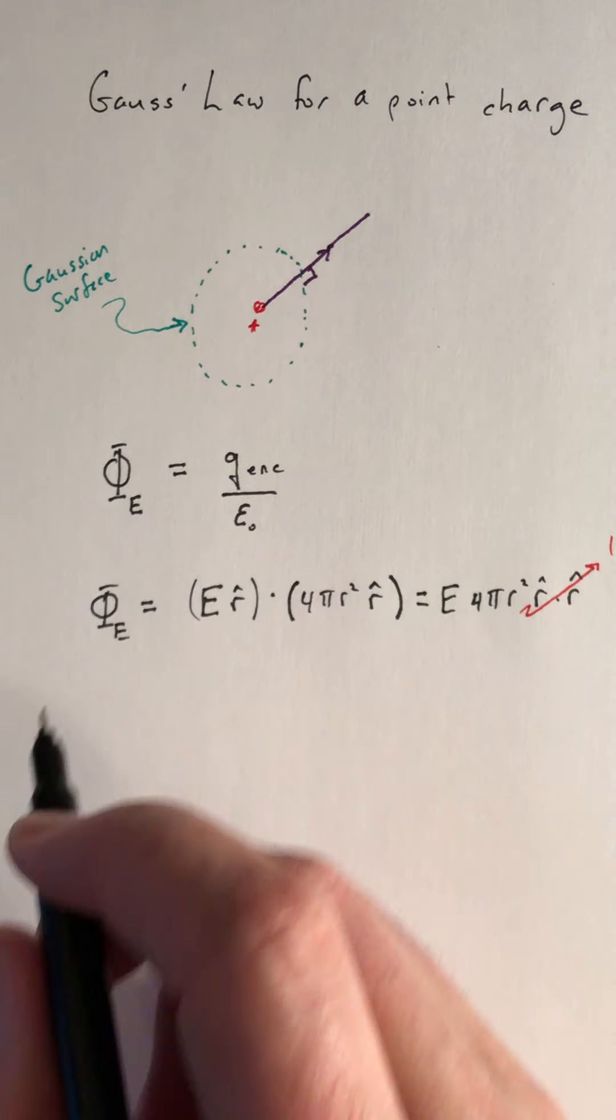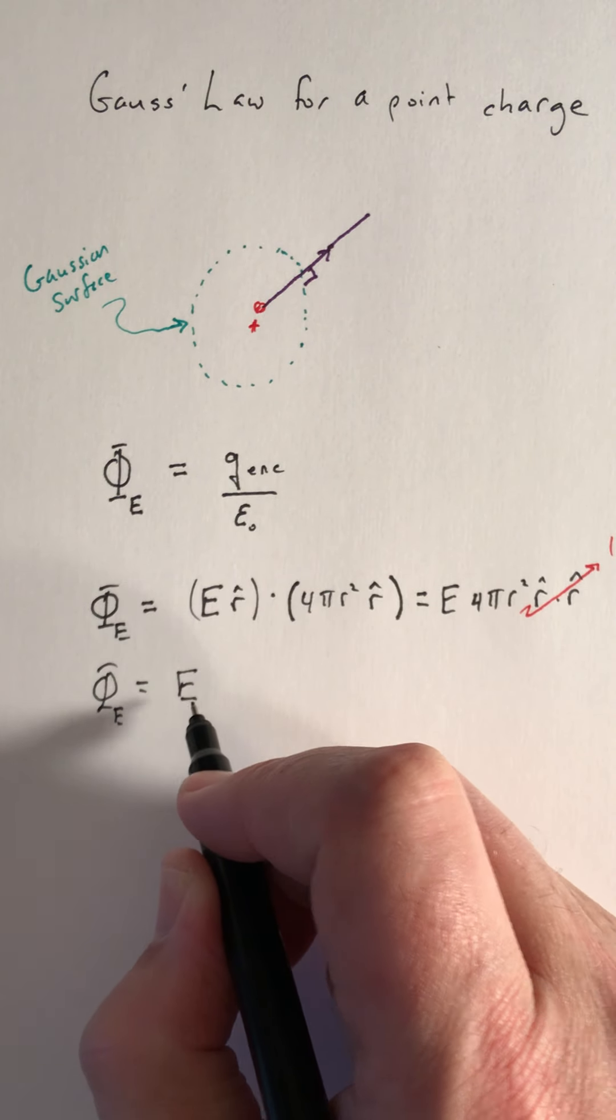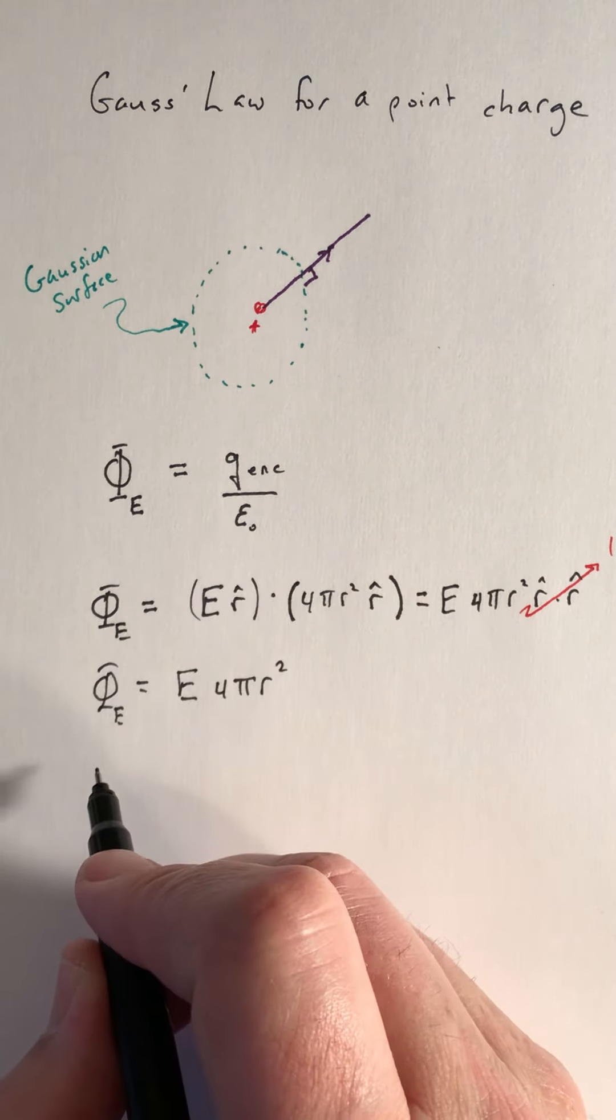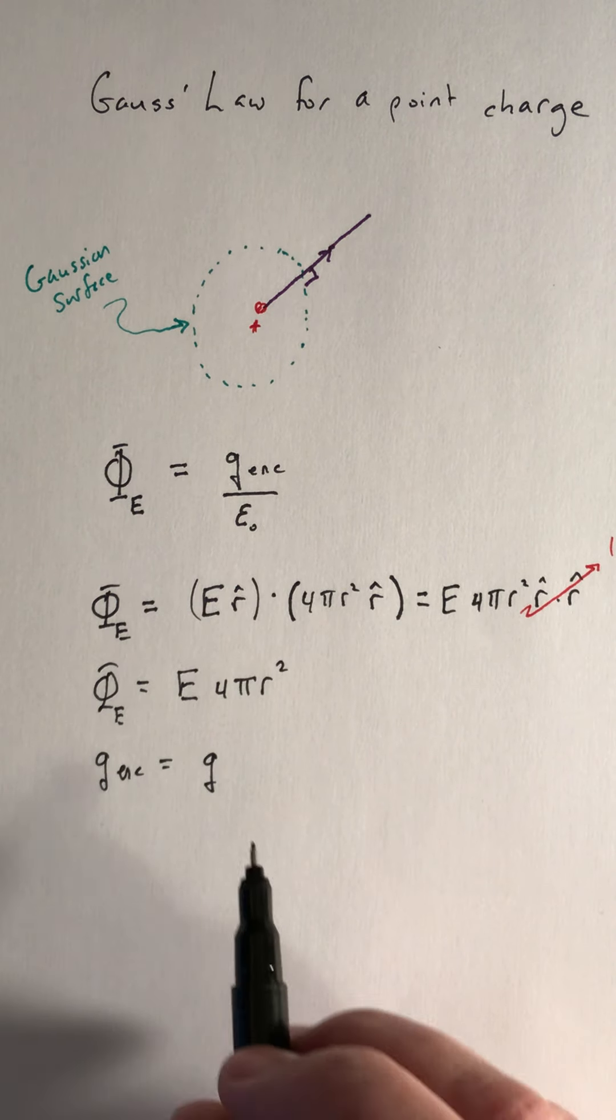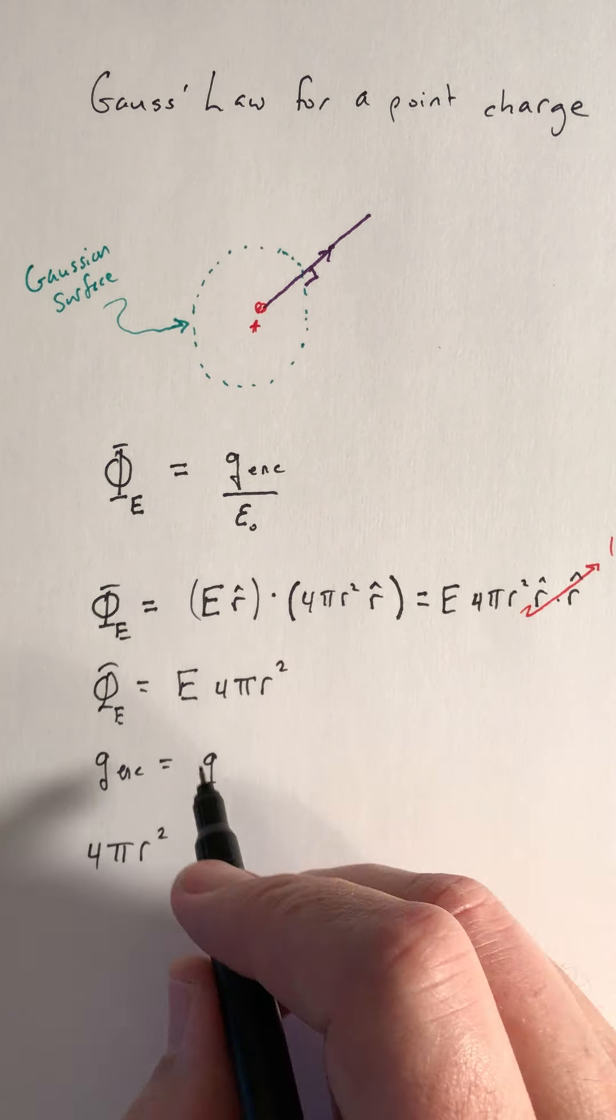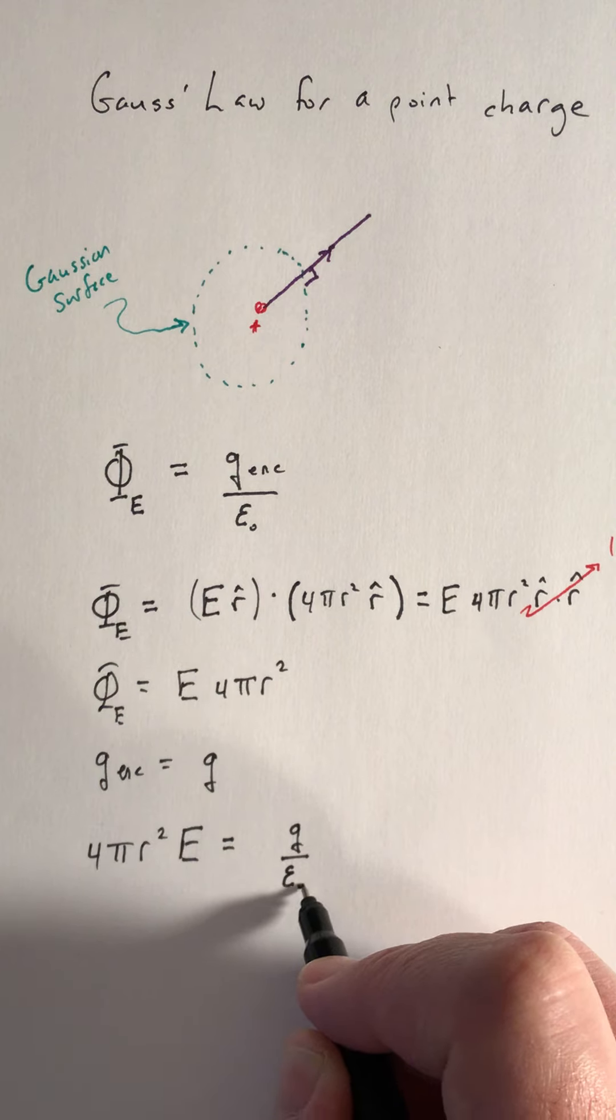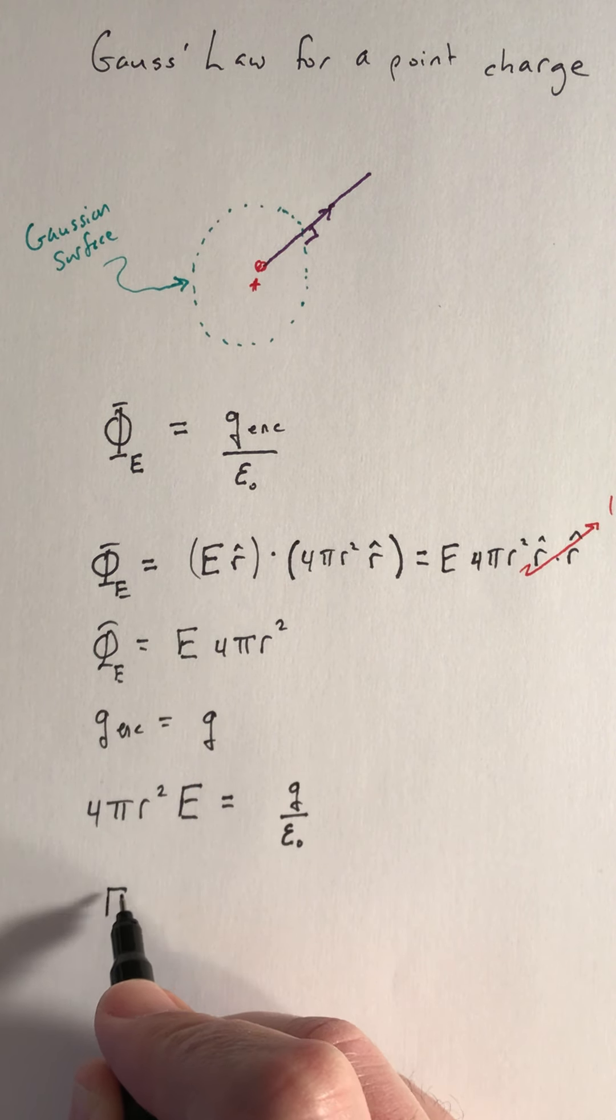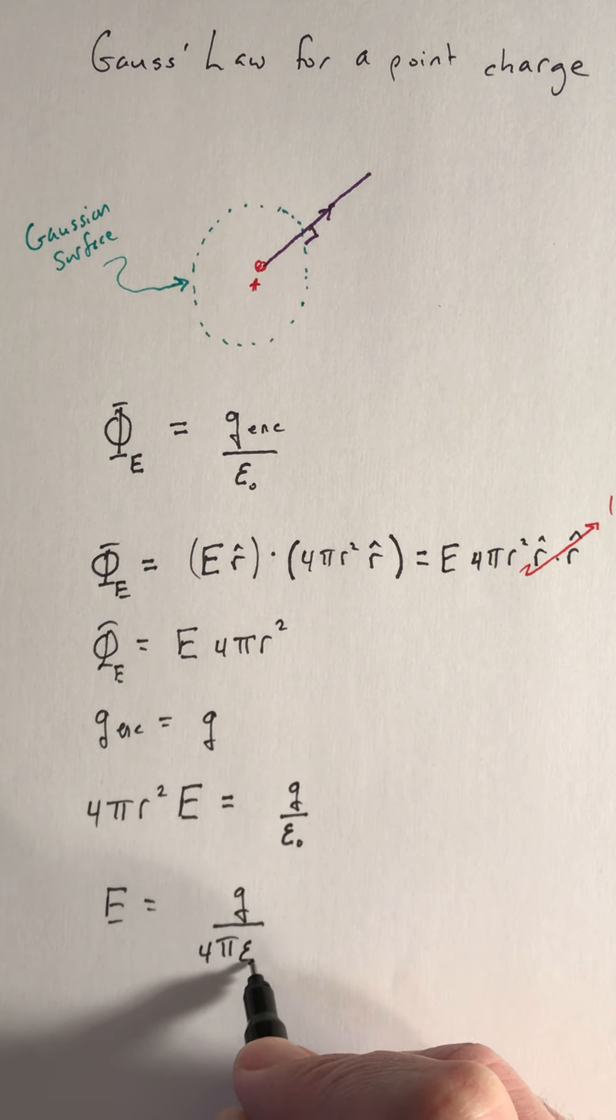So we have the left hand side from Gauss's law tells us that the flux of the electric field is going to be the electric field magnitude, which we're trying to solve for, times 4πr². On the right hand side of Gauss's law in this case, q enclosed is pretty simple, just q. So put everything together in Gauss's law, we have 4πr²E = q/ε₀. Solving for the electric field, we get E = q/(4πε₀r²).